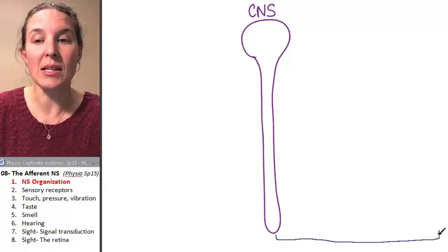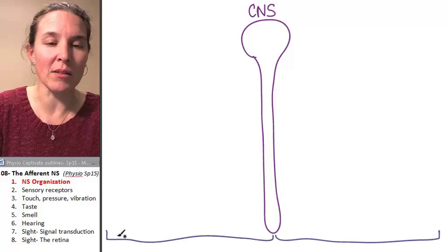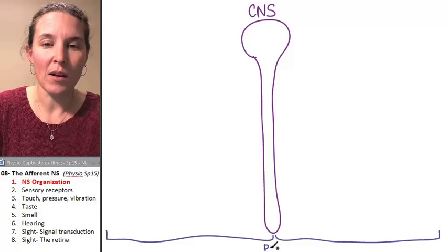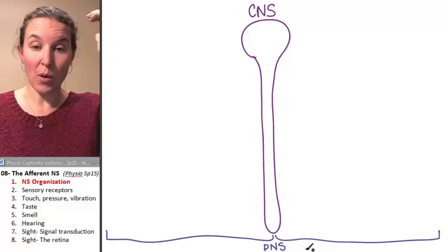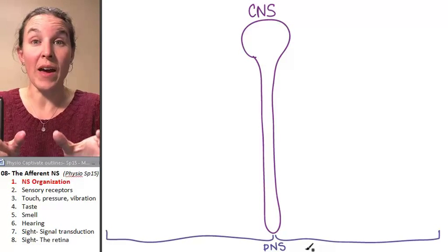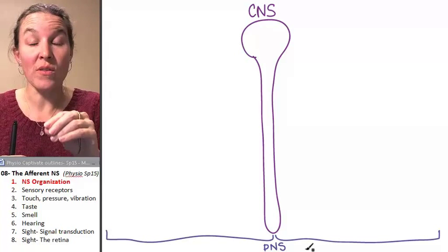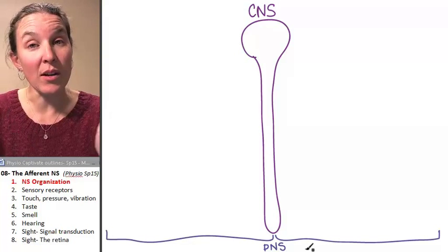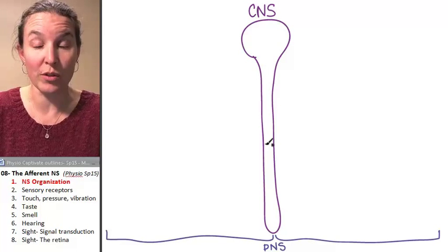Peripheral nervous system is out here. And keep in mind that I'm just drawing my little visual here. But I want to make sure that you're cool with the fact that a neuron can start in the central nervous system, but as soon as it leaves spinal cord or brain, it's now considered part of the peripheral nervous system.